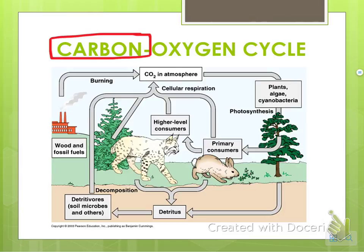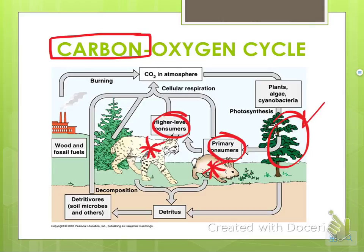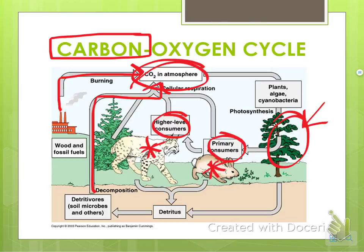Looking at this picture, we have your higher-level consumers, your primary consumers, and your producers. Just like we do, these animals breathe out CO2 and take in O2. Plants, on the other hand, do the opposite — they take in CO2 and release O2. You also have burning from factories that creates more CO2 in the atmosphere, and decomposition that creates more CO2 as well. It's a big process that all overlaps with each other.